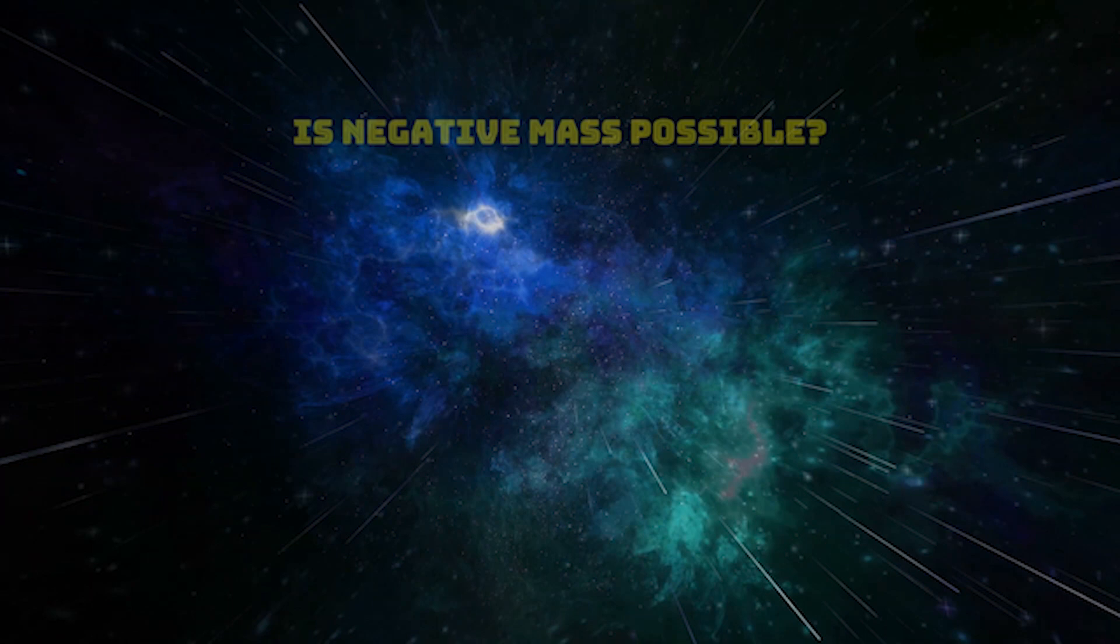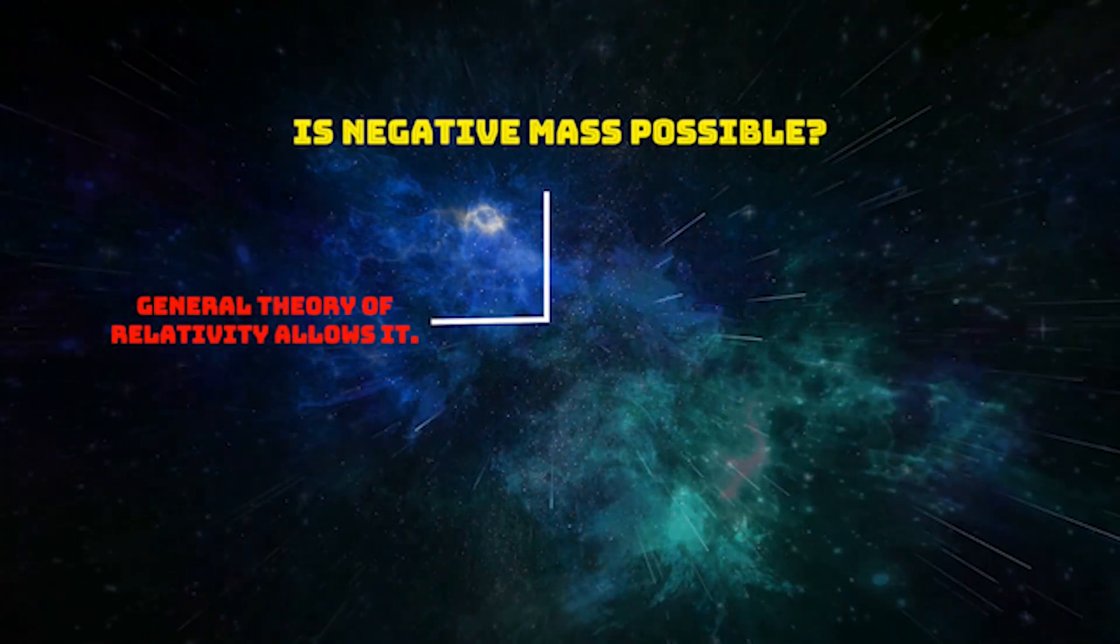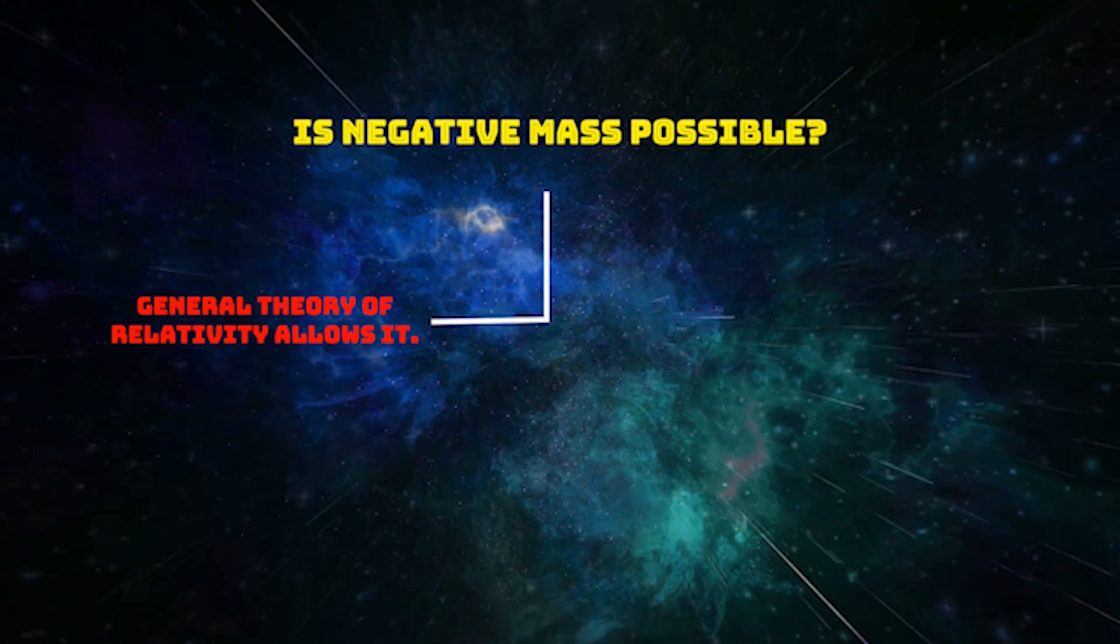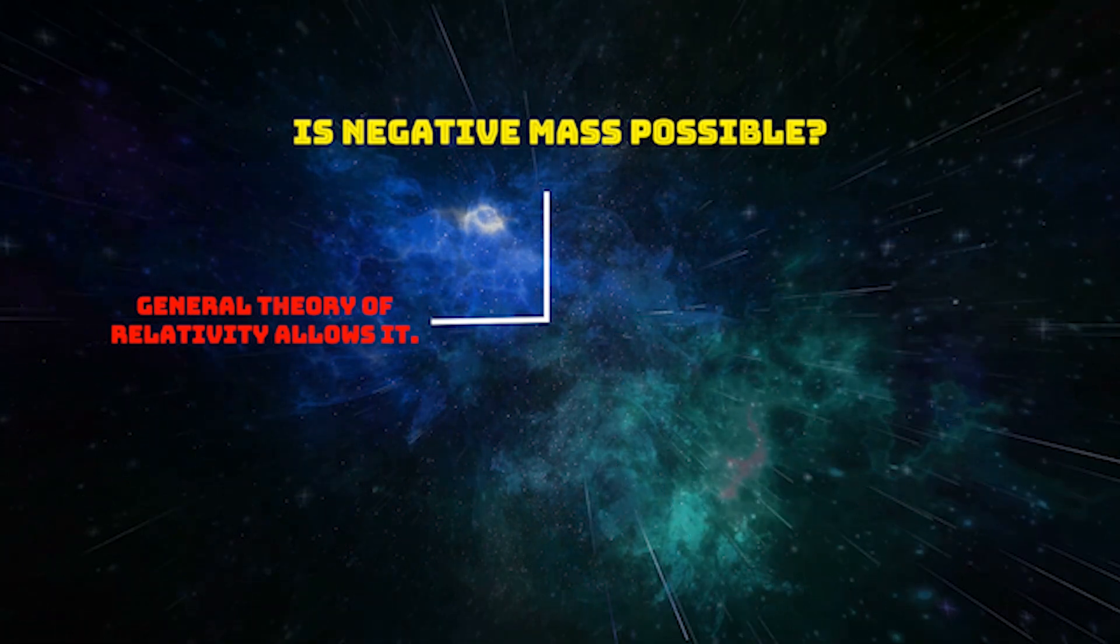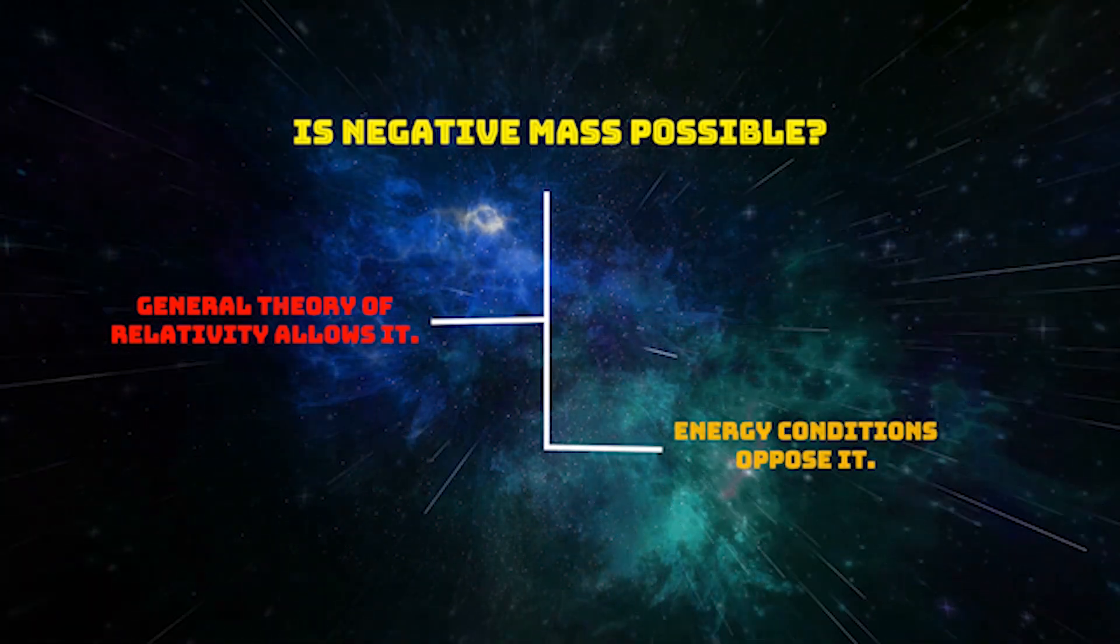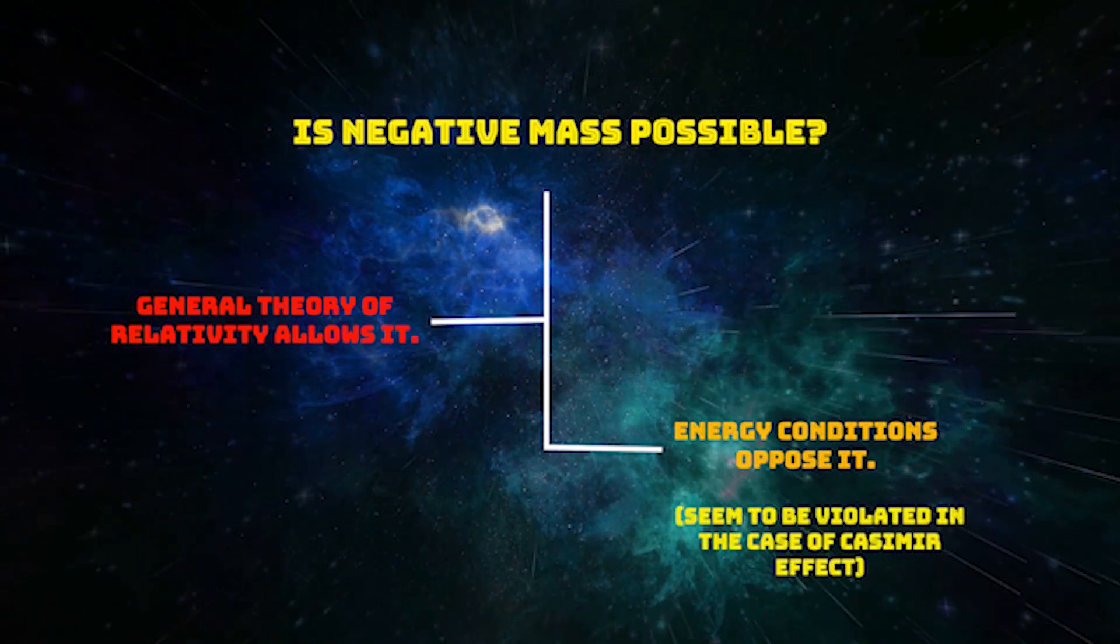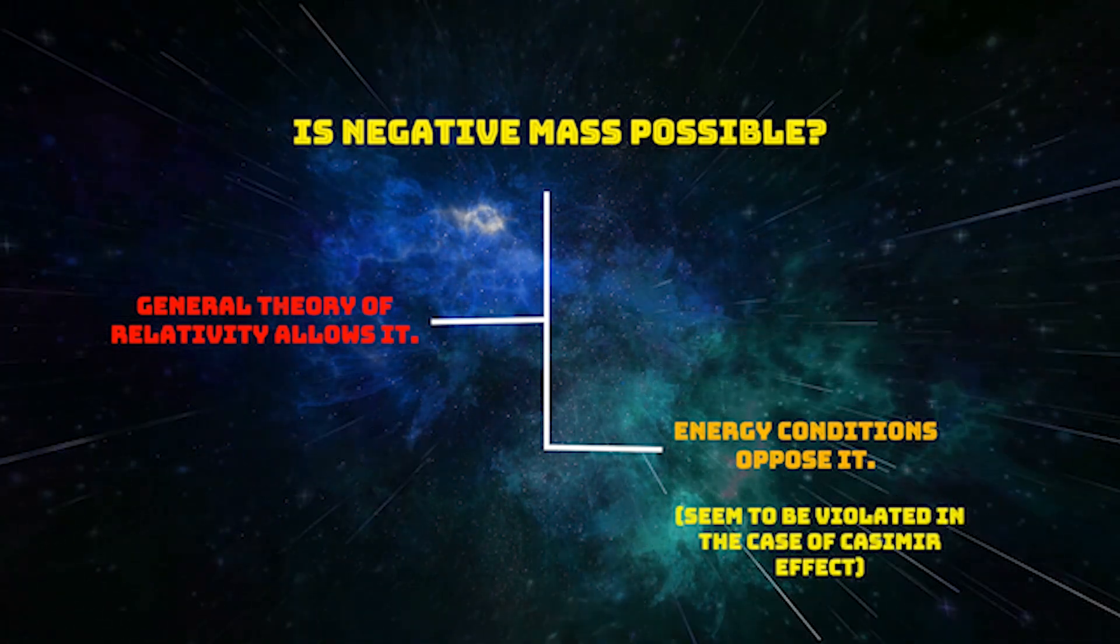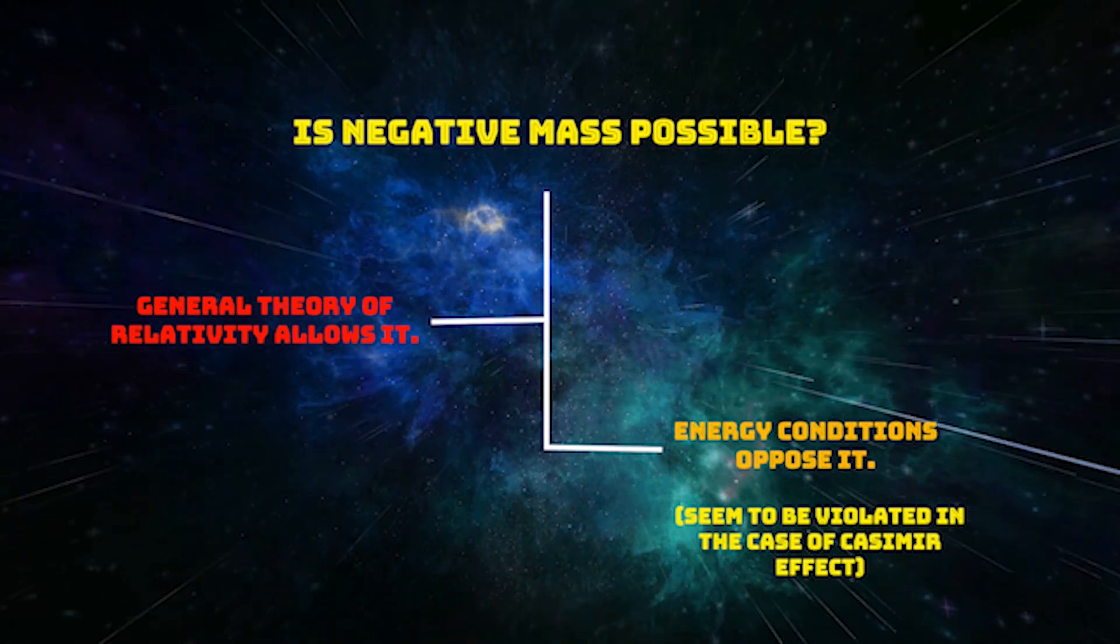So, is it even possible to get them? Although the general theory of relativity does allow it, there are some secondary conditions which prohibit the existence of negative energy. These are known as the energy conditions. But they have no fundamental basis and seem to be violated in the case of the Casimir effect. So, we cannot completely rule out the wormholes or warp drive theory depending only on the energy conditions.